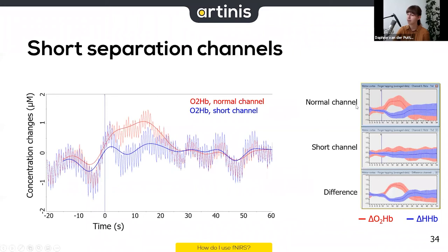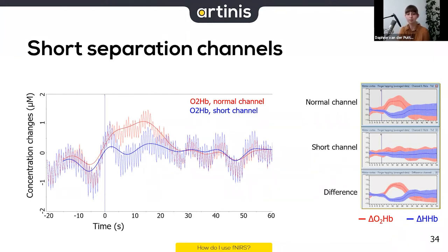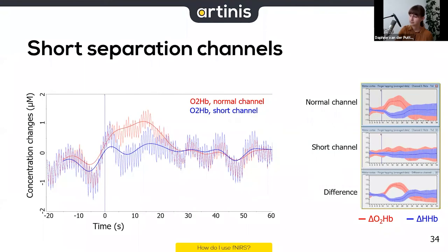Looking at averaged data: the normal channel shows a nice response in red (oxyhemoglobin) and blue (deoxyhemoglobin), though with a larger standard deviation. The short channel shows that oxyhemoglobin in the skin and skull also increases slightly at stimulus onset — possibly from blushing, breathing, or blood pressure. When you systematically subtract the two, the resulting signal is a little cleaner, the brain activity estimate improves, and the standard deviation is smaller.